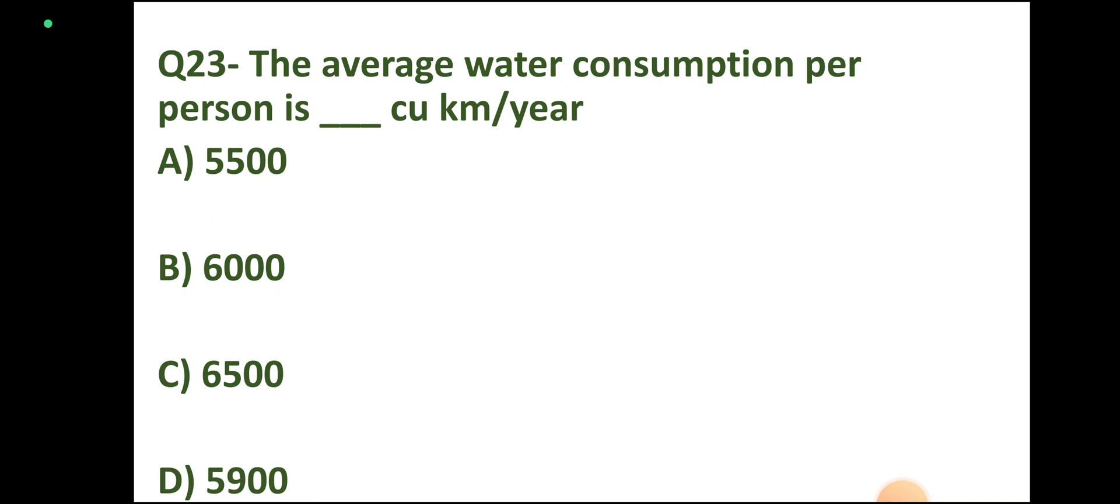Question number 23: The average water consumption per person is blank cubic km per year. Correct answer: option B, 6,000 cubic km per year.